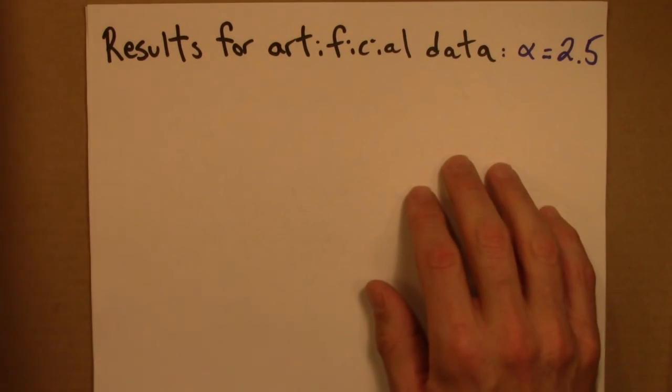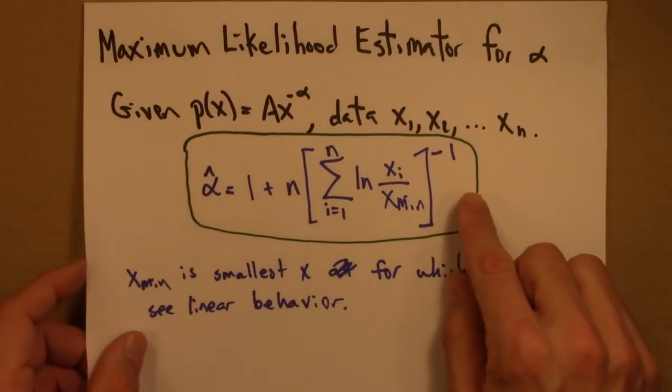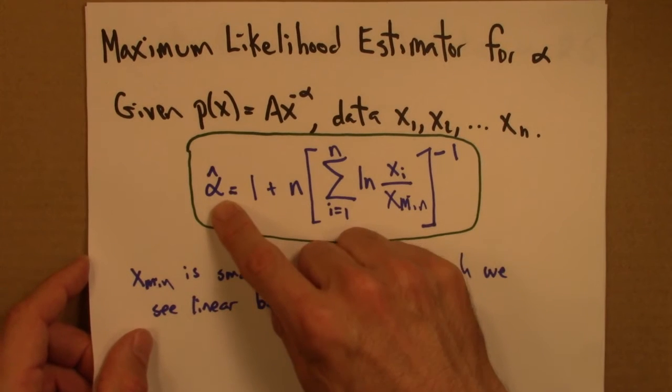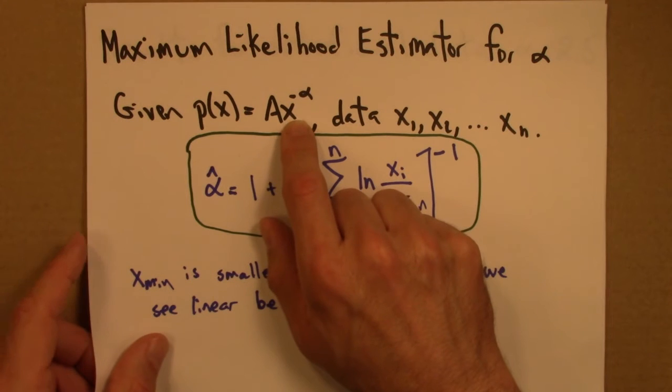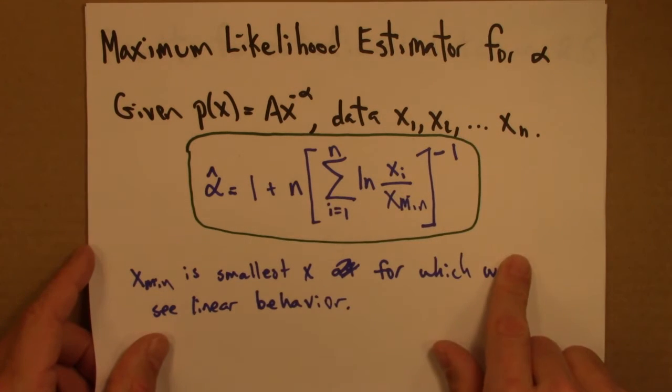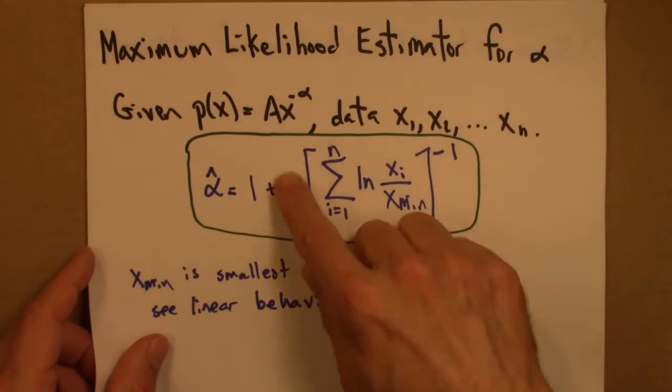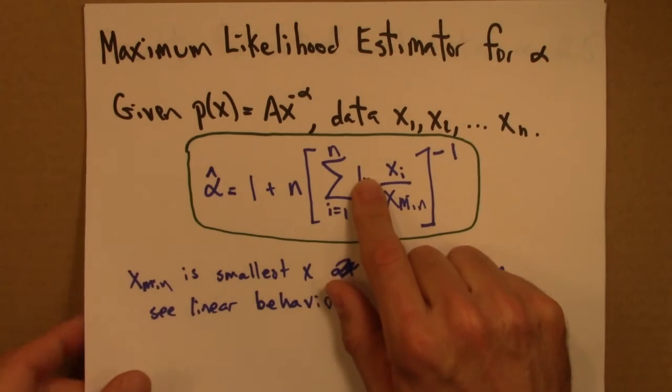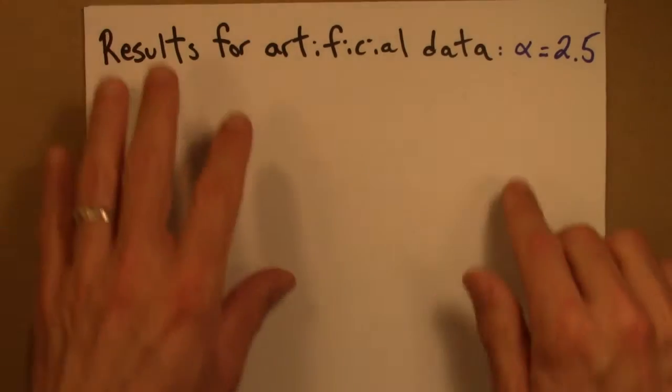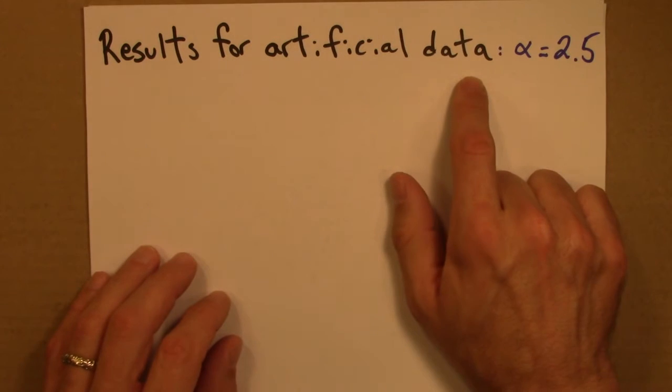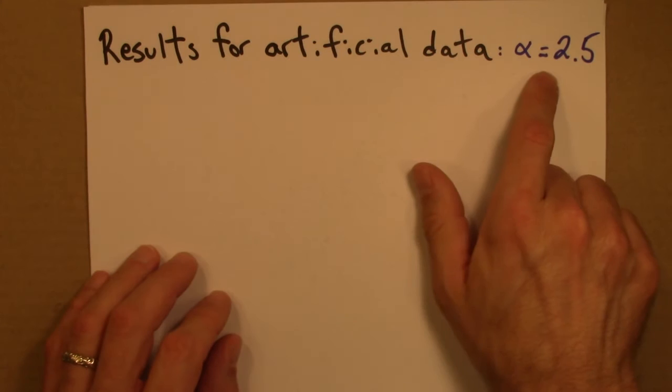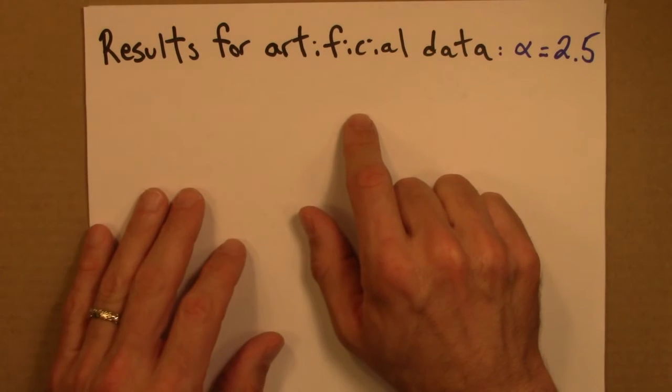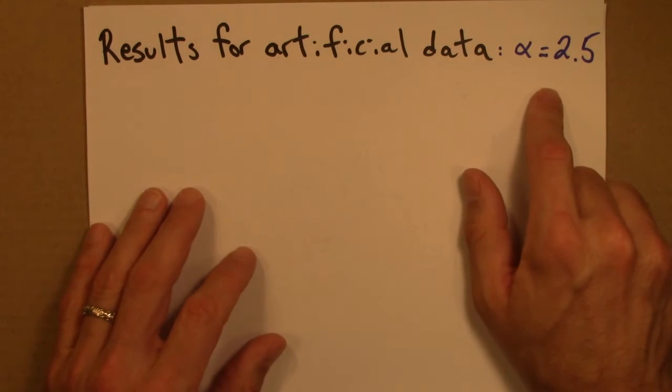And I should mention that this result is the result for continuous variable x, where x can take on any value between x min and infinity. If it's discrete, the formula isn't anywhere near as nice. Okay, so they generated artificial data. I forget how many, 10,000 data points for a discrete power law and a continuous power law.